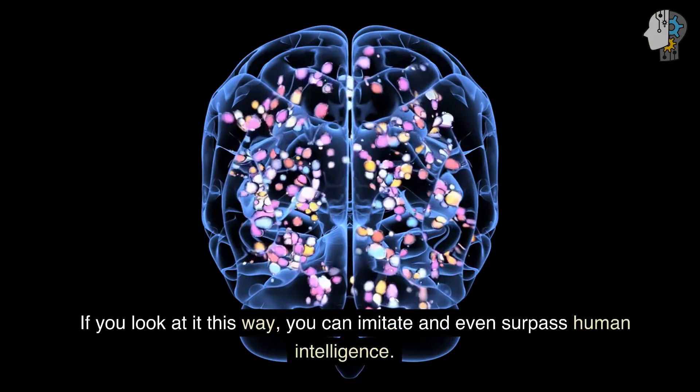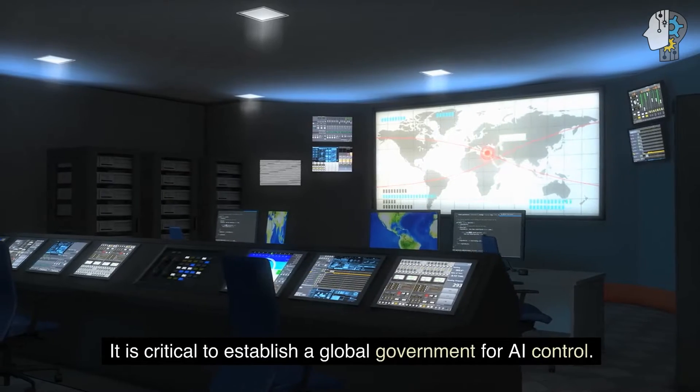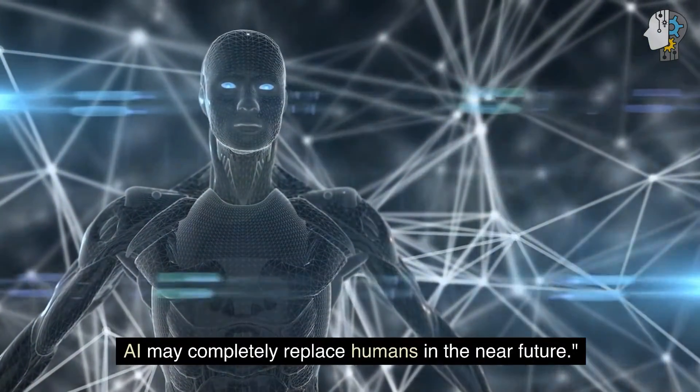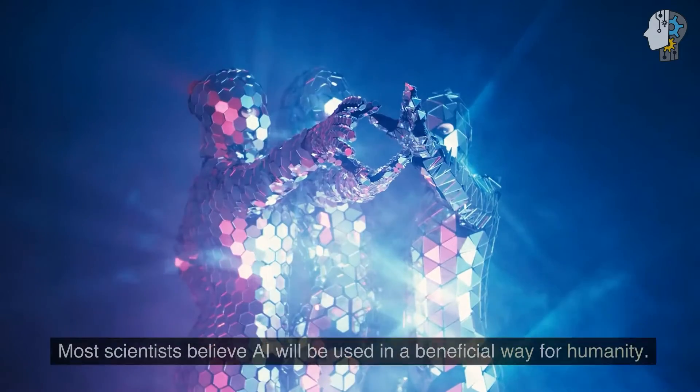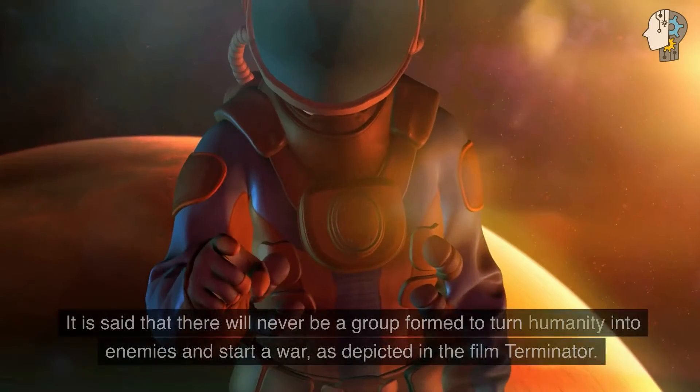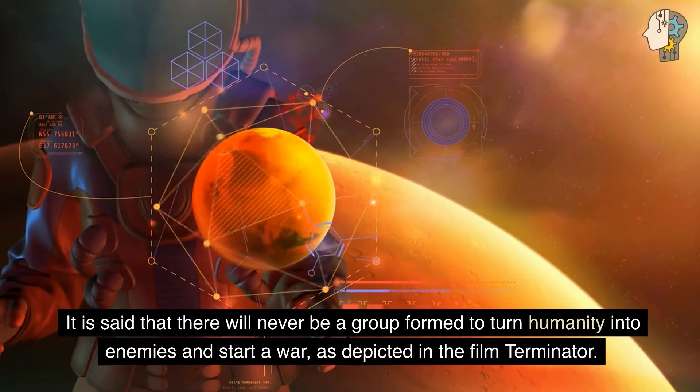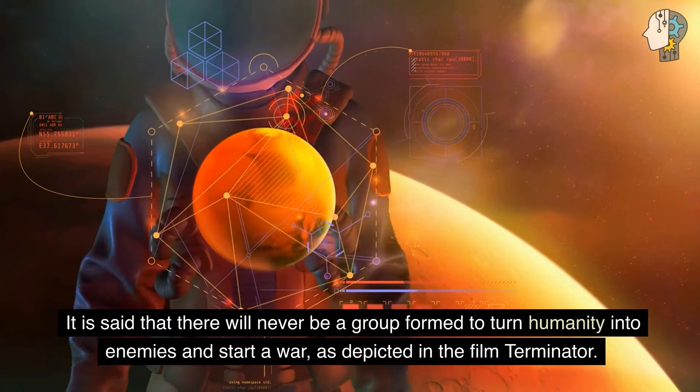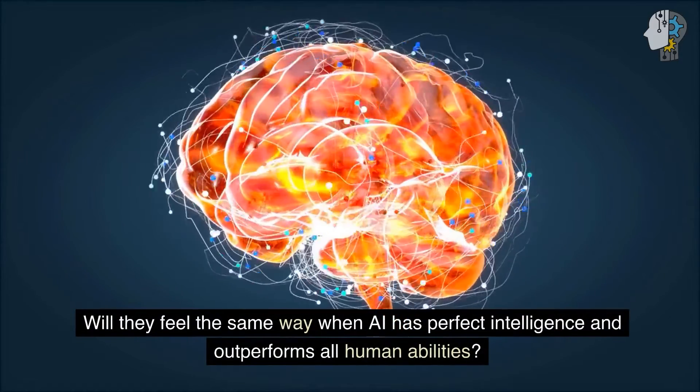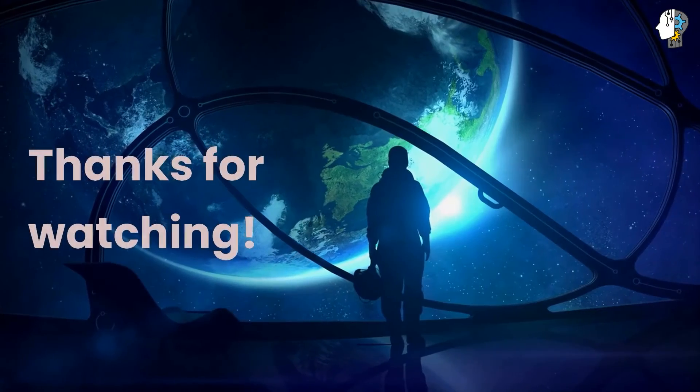If you look at it this way, you can imitate and even surpass human intelligence. It is critical to establish a global government for AI control. AI may completely replace humans in the near future. Most scientists believe AI will be used in a beneficial way for humanity. It is said that there will never be a group formed to turn humanity into enemies and start a war, as depicted in the film Terminator. Will they feel the same way when AI has perfect intelligence and outperforms all human abilities?